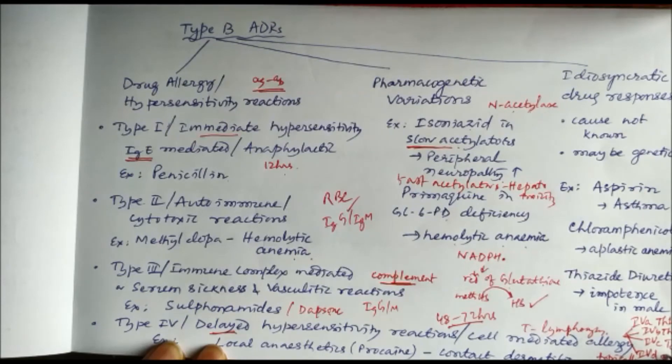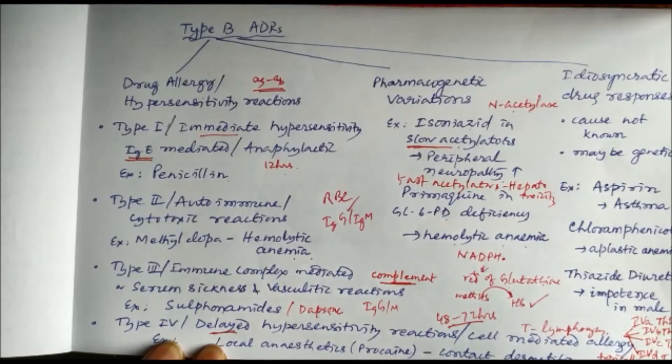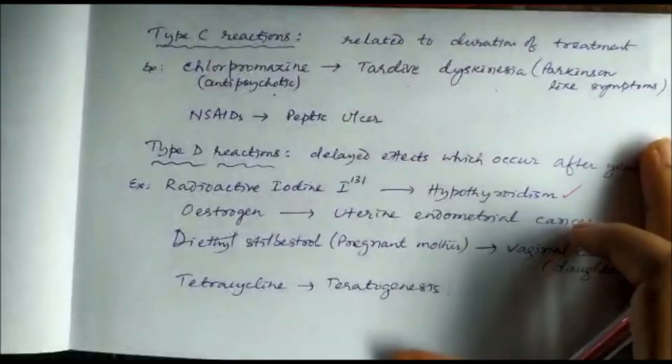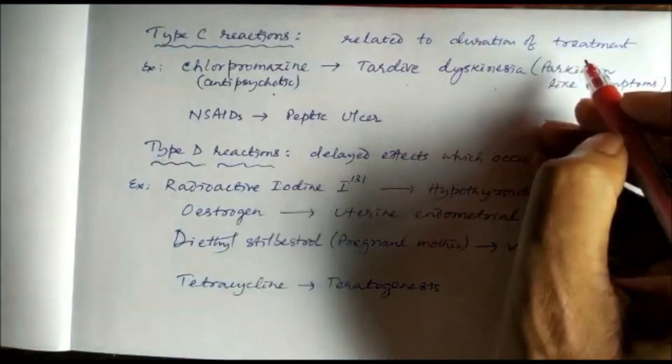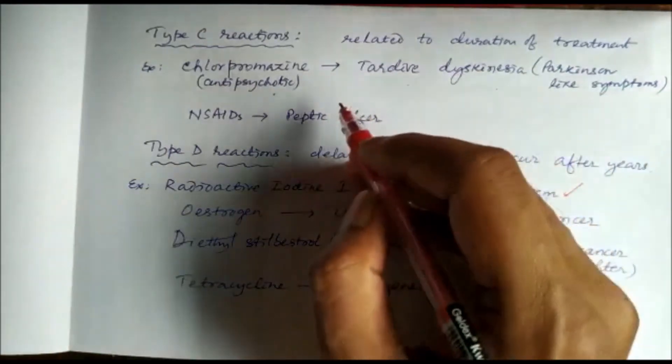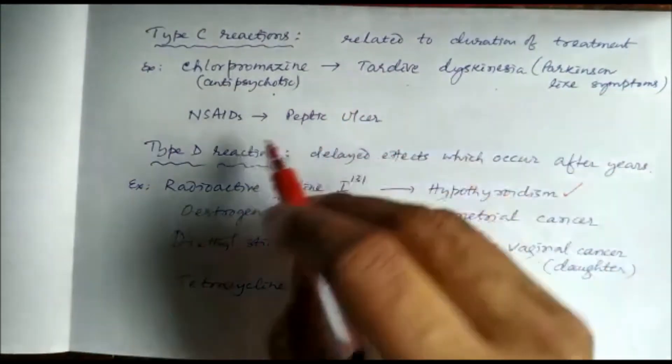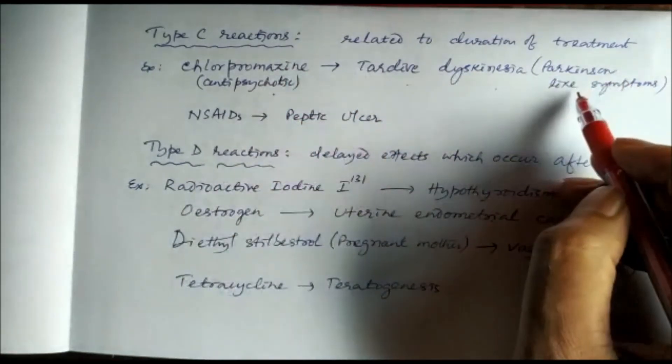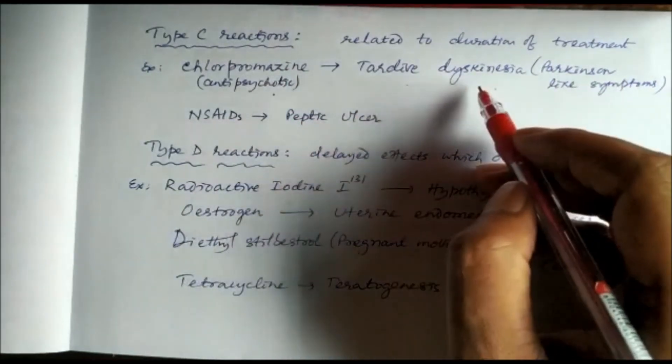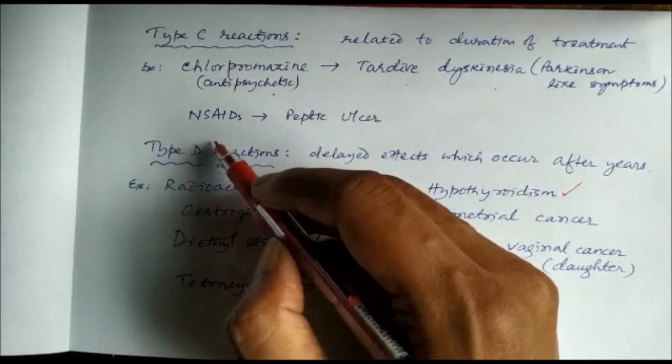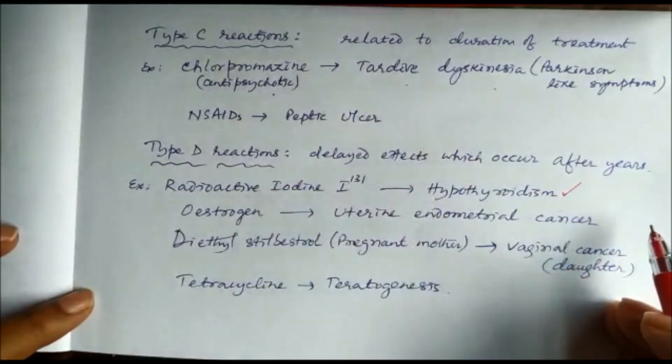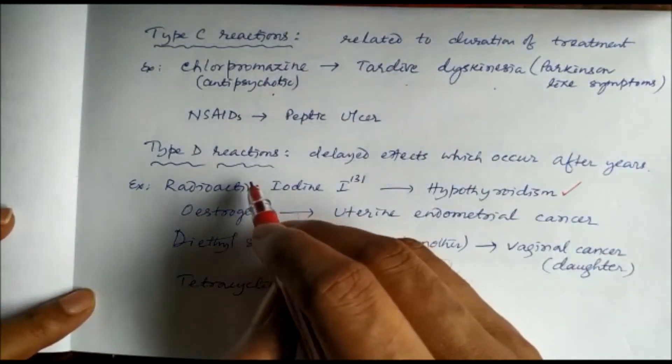Type C adverse drug reactions are related to the duration of treatment. If they are used for a long period, they cause adverse drug reactions. Chlorpromazine is the antipsychotic drug. If it is used for a long period, then it will show Parkinson-like symptoms like tardive dyskinesia. Similarly, all the non-steroidal anti-inflammatory drugs, if used for a long period, they can cause peptic ulcer.